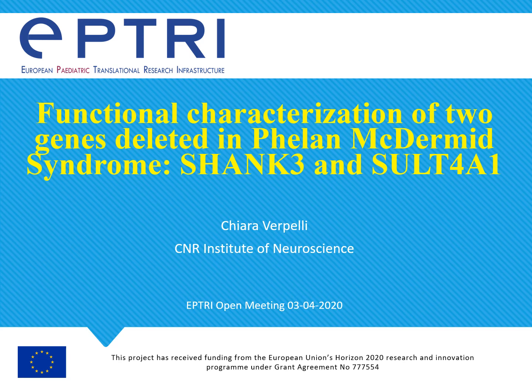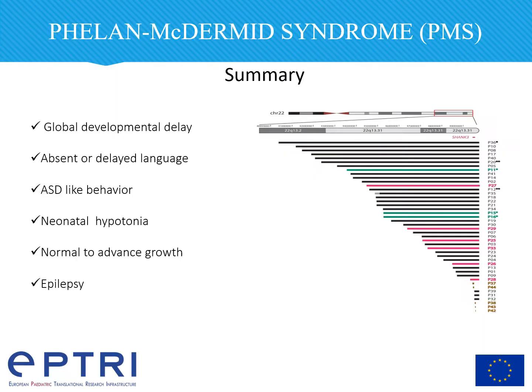Functional characterization of two genes deleted in Phelan-McDermid syndrome, SHANK3 and SULT4A1. Phelan-McDermid syndrome is a complex neurodevelopmental disorder characterized by global developmental delay, absent or delayed language, ASD-like behavior, neonatal hypotonia, normal to advanced growth, and more than a quarter of patients show a severe form of epilepsy. The syndrome is due to a deletion on chromosome 22Q13, and the size of the deletion is extremely heterogeneous among patients, involving different genes.